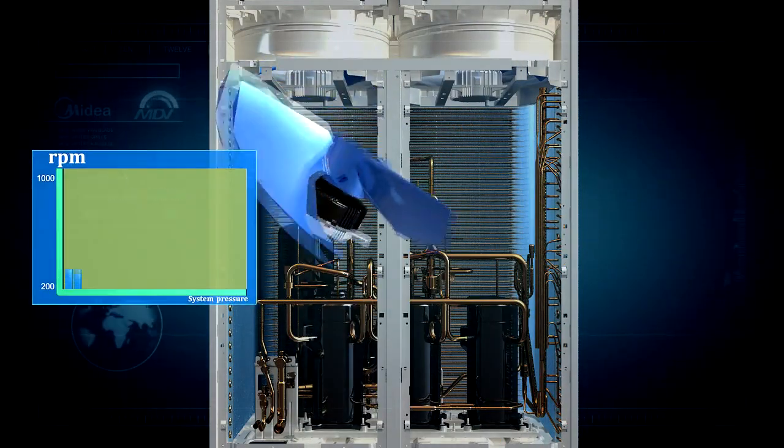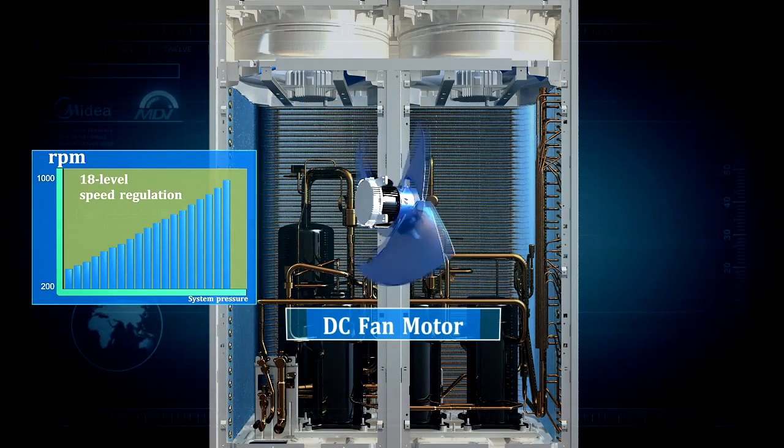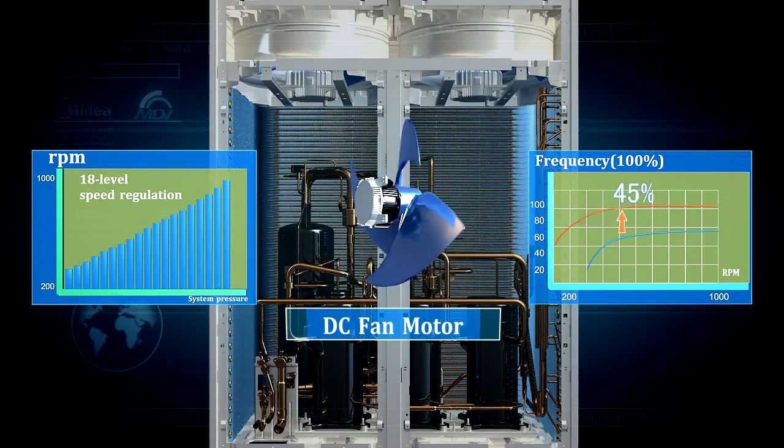DC Fan Motor has 18-level speed regulation. Compared with conventional AC Fan Motor, it improves the efficiency by 45%.